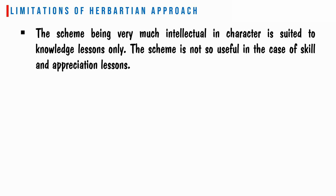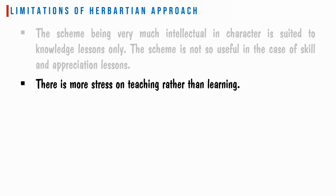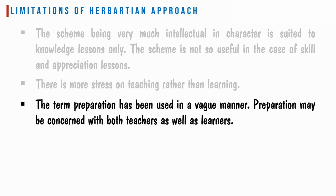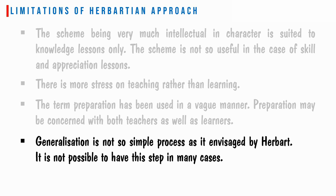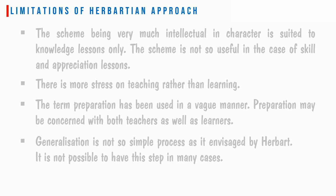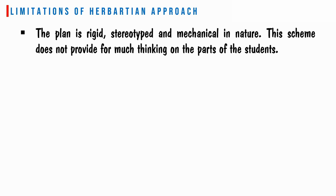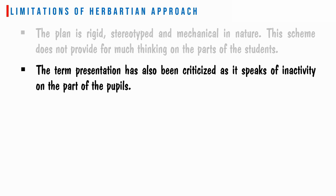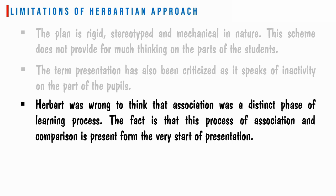Limitations of the Herbertian approach: The scheme is very intellectual in character and suited to knowledge lessons only; it is not useful for skill and appreciation lessons. There is more stress on teaching rather than learning. The term 'preparation' has been used in a vague manner, as it may concern both teacher and learner. Generalization is not as simple a process as Herbert envisaged, and it is not possible in many cases. The plan is rigid, stereotyped, and mechanical, and does not provide for much thinking on the part of students. The term 'presentation' has also been criticized as it implies inactivity on the part of pupils. Herbert was wrong to think association was a distinct phase; in fact, association and comparison begin from the very start of presentation.